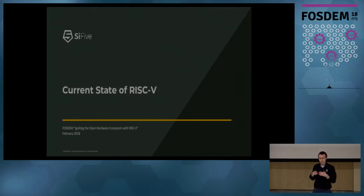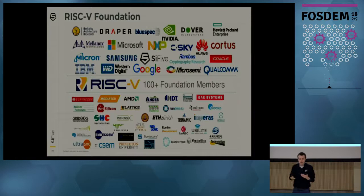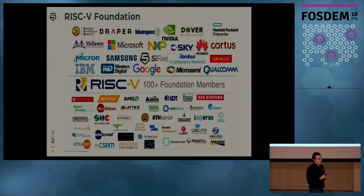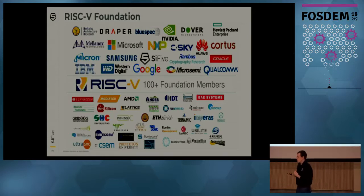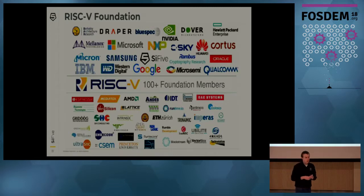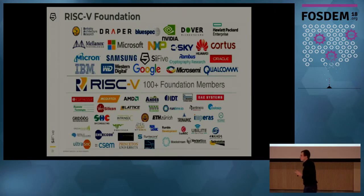Now I'm going to talk about the current state of RISC-V, which is really defined by the RISC-V Foundation. The RISC-V Foundation is a non-profit with over 100 members, and its charter is to steward the RISC-V ISA — maintaining the ISA specifications, involving new extensions, and this sort of thing. There are a lot of member companies here; thank you for joining and helping to contribute to open source hardware.